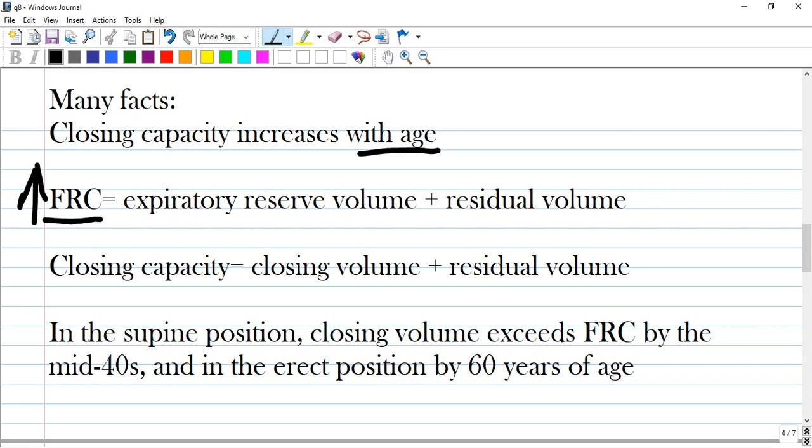Closing capacity equals closing volume plus residual volume. And in the supine position, closing volume exceeds functional residual capacity by the middle 40s, age of 40. And in the erect position by 60 years of age.